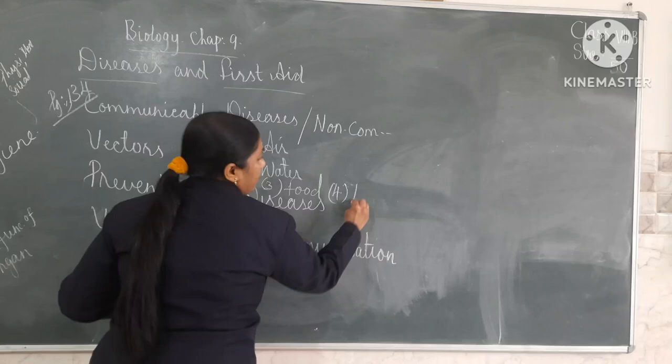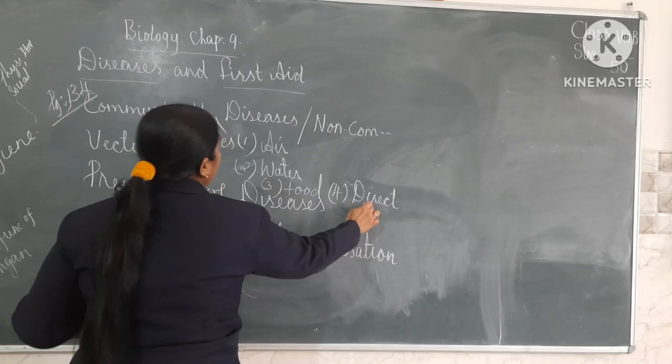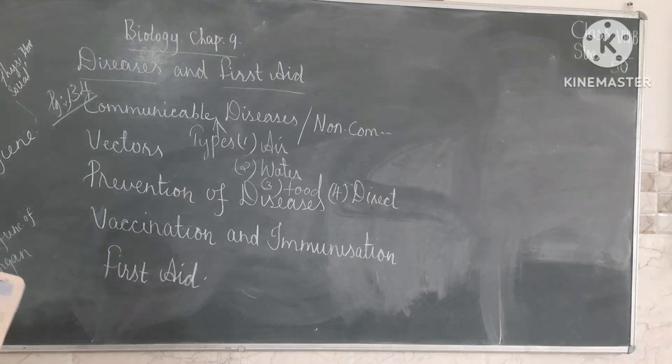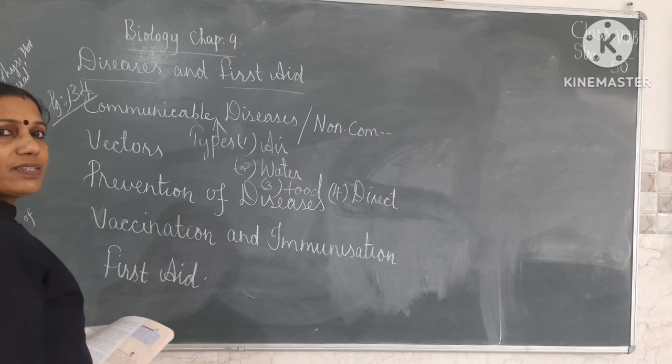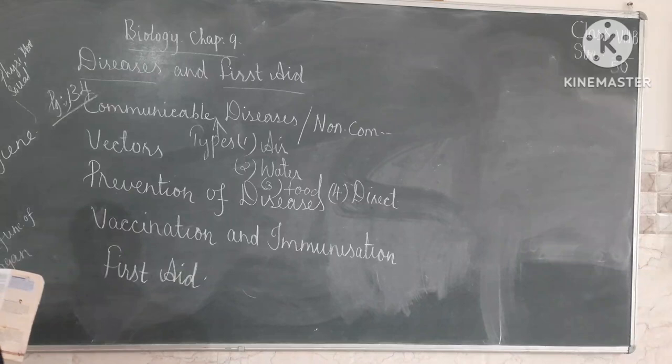The fourth type is direct contact. Diseases spread when a healthy person comes into contact with an infected person, causing the spread of that disease. Examples include common cold, conjunctivitis — which causes redness of the eyes — flu, and chicken pox. These diseases spread through direct contact with an infected person.